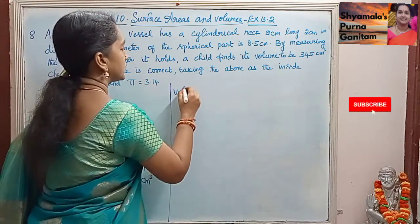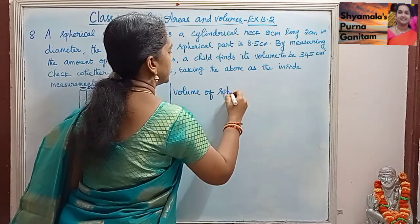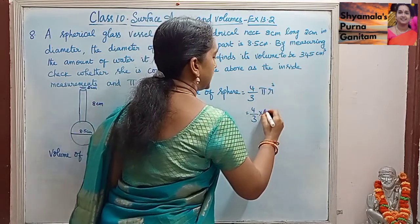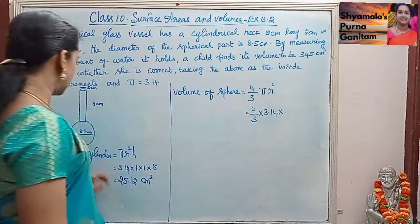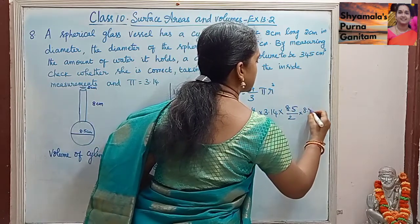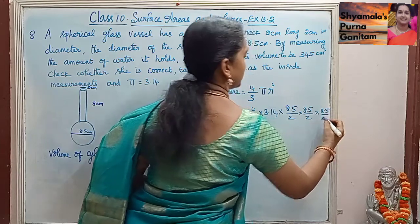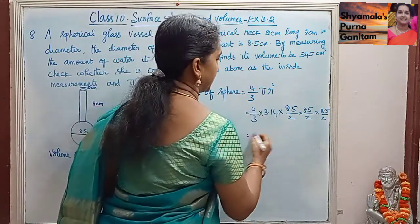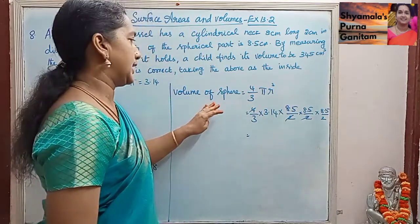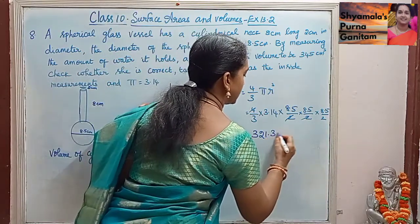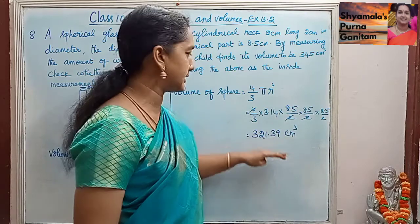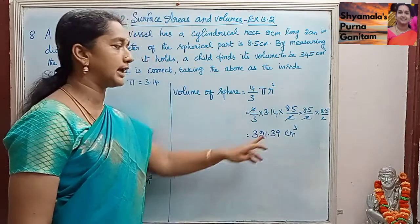Then volume of sphere. Volume of sphere is equal to 4 by 3 pi r cube. So this is 4 by 3 into 3.14 into r cubed. The diameter is 8.5, so the radius is 8.5 by 2, cubed — that is 8.5 by 2 into 8.5 by 2 into 8.5 by 2. When we simplify, this 2 and 2 get cancelled with the 4. Further simplification gives the volume of the sphere as 321.39 cm cube — we multiply all these things and divide by 6 to get 321.39 cm cube.